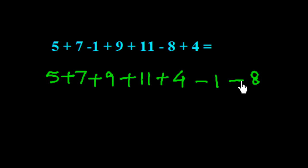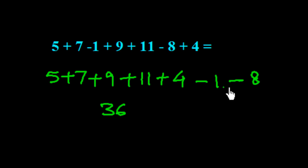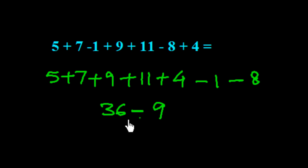Now we add up the positive numbers: 5 plus 7 is 12, plus 9 is 21, plus 11 is 32, plus 4 is 36. For the negative numbers: minus 1 minus 8 is minus 9. So we get 36 minus 9, which is 27.